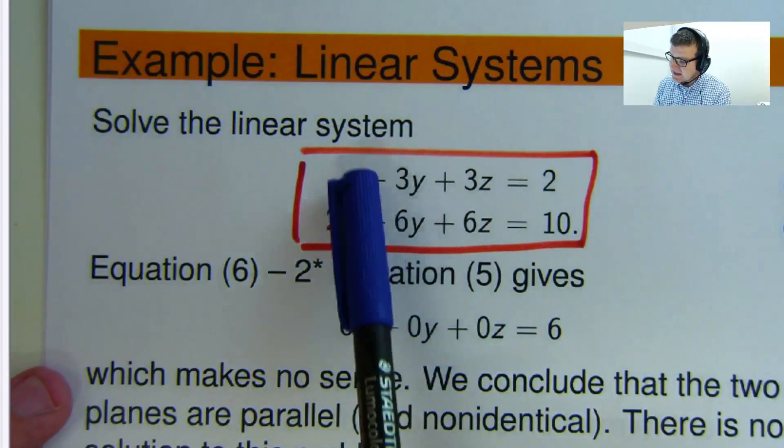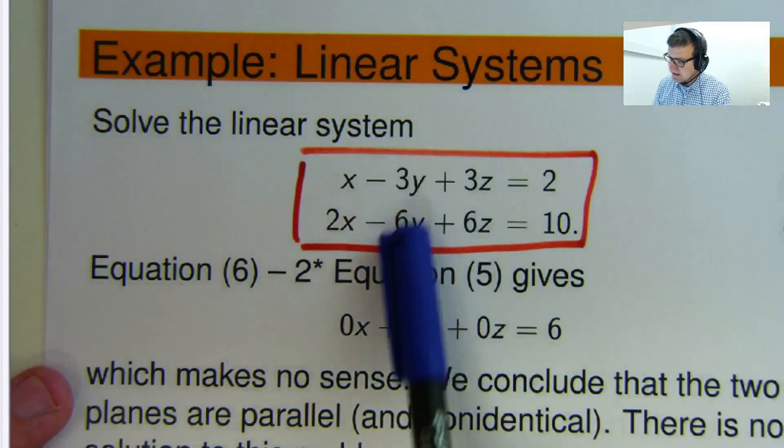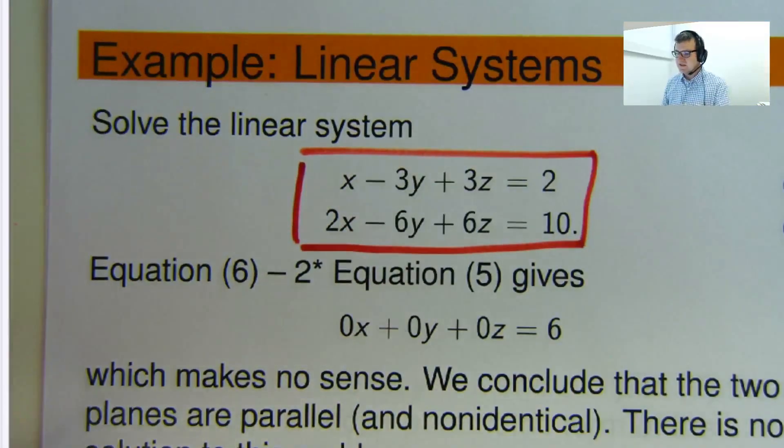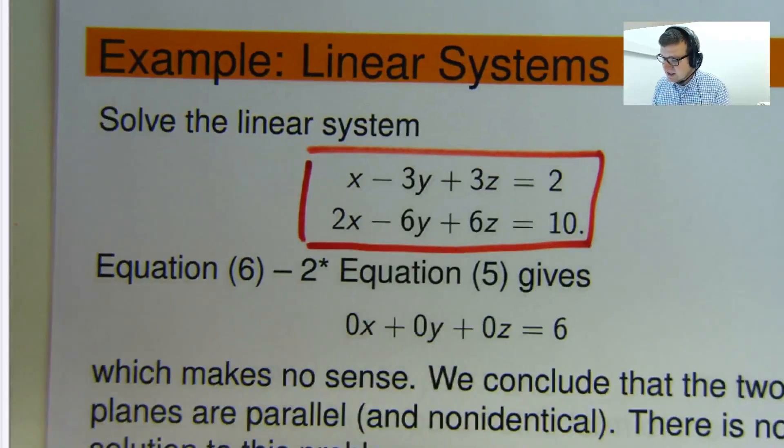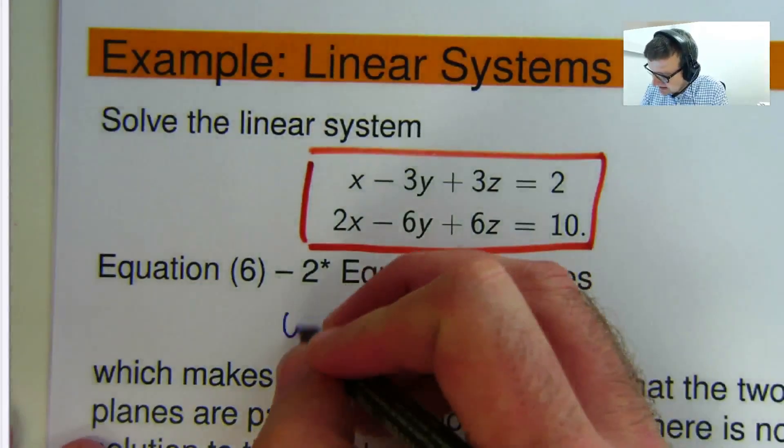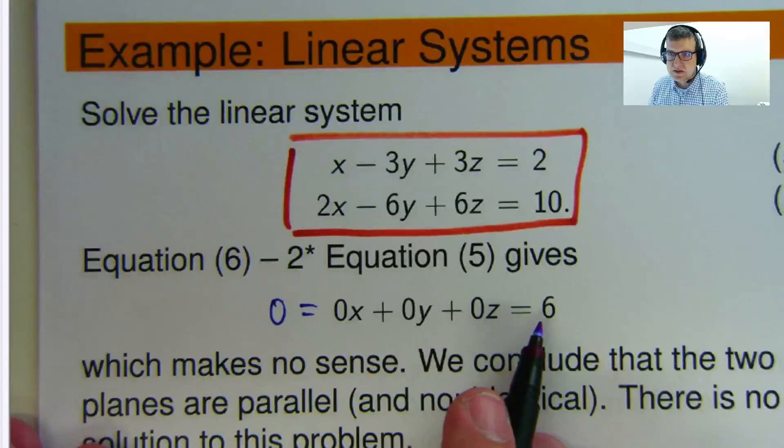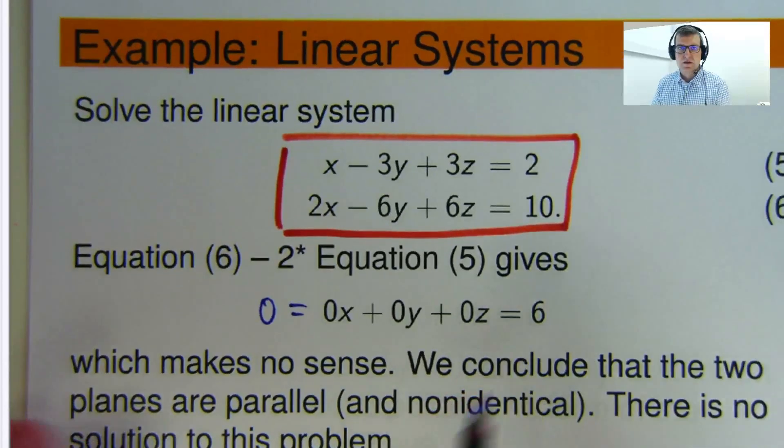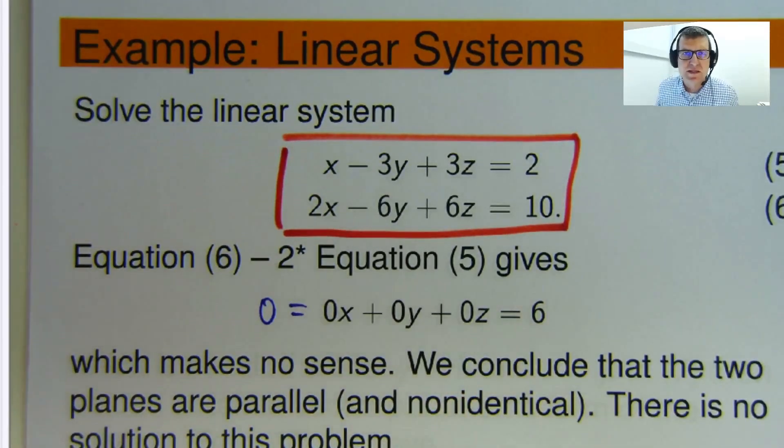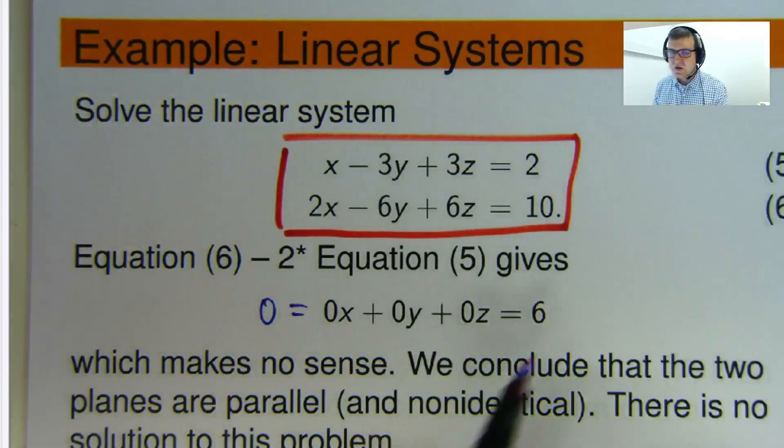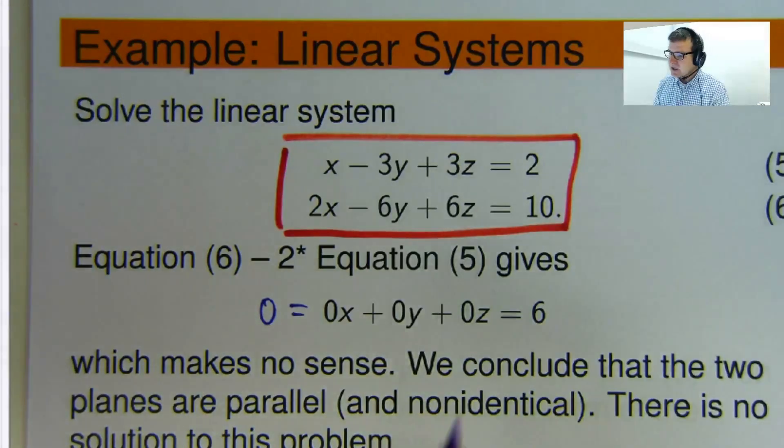And you can see here that what I've done is I've taken two times equation five away from equation six to eliminate the x's. Now if I do that, these things disappear, these disappear, these disappear, and I'm left with positive six on the other side. So what does this tell us? Well, it says basically zero equals six. Whoa, hang on, what does that mean? Have we broken mathematics? No.